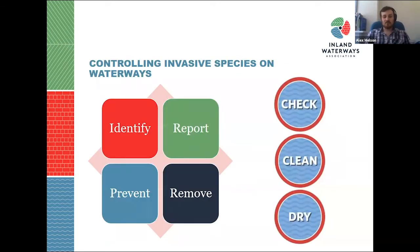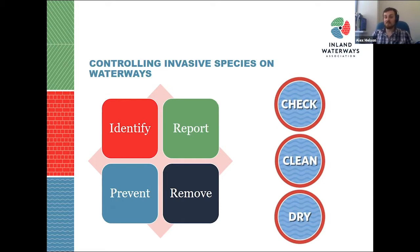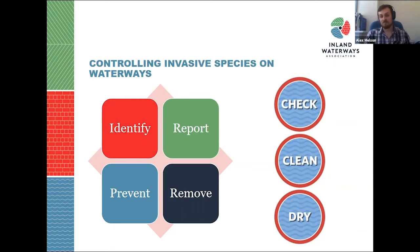How can you on the waterways help control invasive species? It's really important to identify what species you might come across. You can find this information on the NNSS — the Non-Native Species Secretariat — which has over 50 toolbox talks on identifying invasive species. You can also visit the IWA website for information on the more common ones found along waterways. By familiarising yourself with these species, you can then report them to your local navigation authority or land managers, helping address problems before small infestations become massive ones.